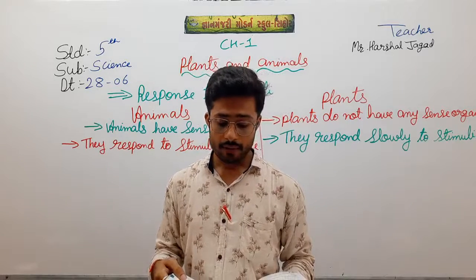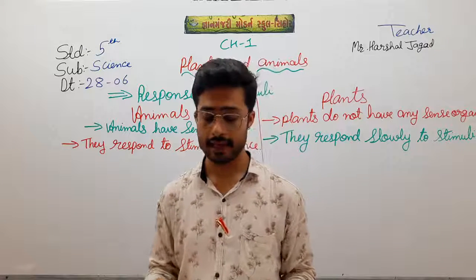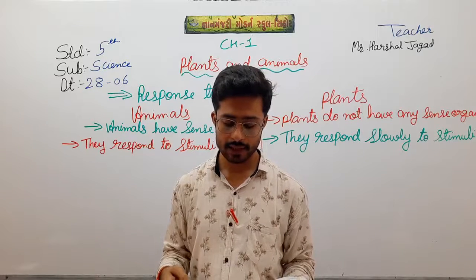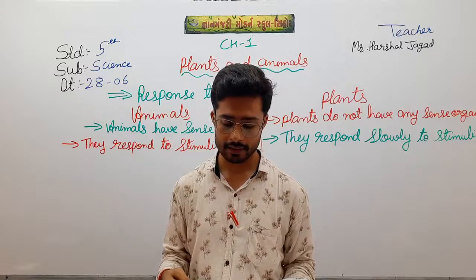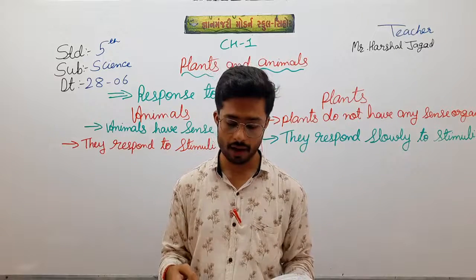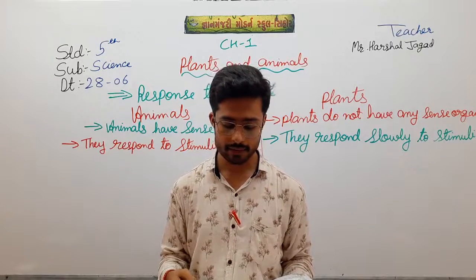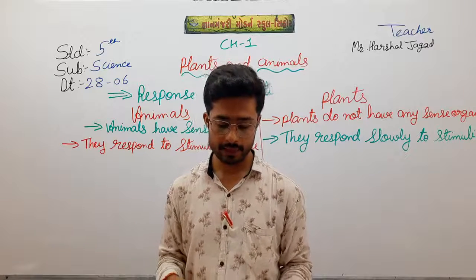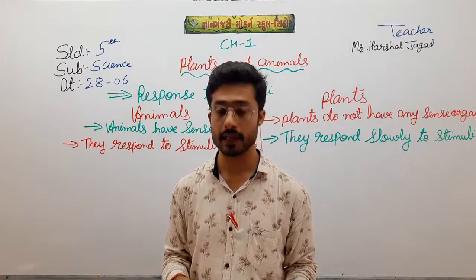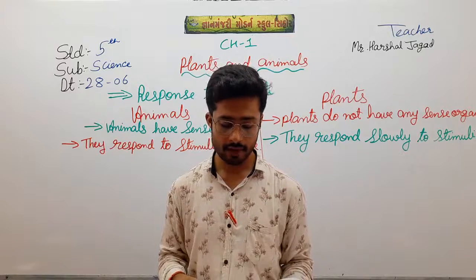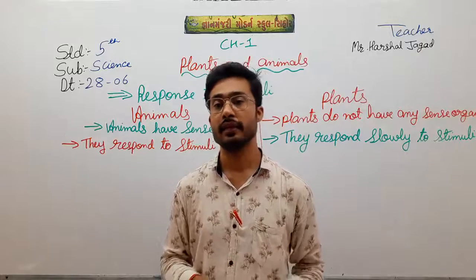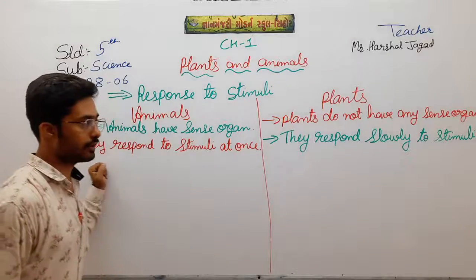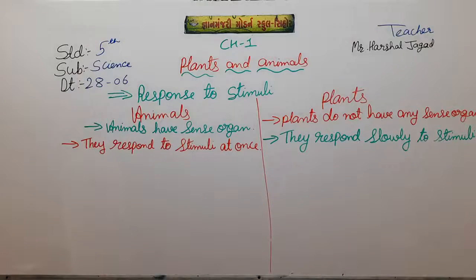Plants do not have sense organs such as eyes, nose, or ears, but they do respond to stimuli — although they do it slowly. It is by feeling the warmth of the sun that the morning glory and the sunflower open out — they do not see the sun. Leaves of plants such as touch-me-not fold up if you touch them. In temperate regions, trees shed their leaves as winter approaches. In spring, when they feel the warmth of the sun, they put out leaves again. So in that way, plants respond to stimuli, but they respond slowly.